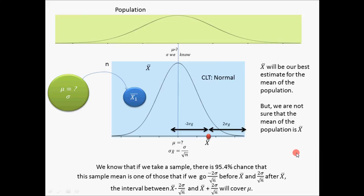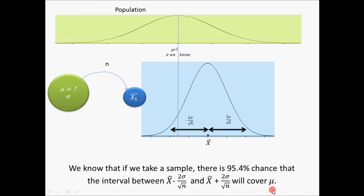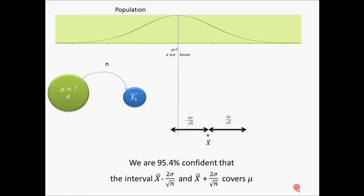Therefore, to summarize: we know that if we take a sample, there is a 95.4 percent chance that this sample mean is one of those where if we go two sigma divided by square root of n below X-bar and two sigma divided by square root of n above X-bar, this interval will cover mu. Therefore, when we take a sample with mean X-bar, we are 95.4 percent confident that the interval X-bar minus 2-sigma divided by square root of n to X-bar plus 2-sigma divided by square root of n covers the mean of the population.